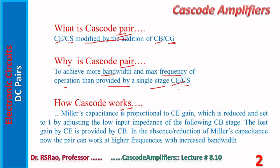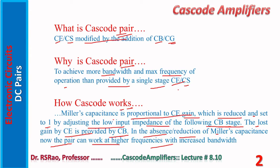Miller's capacitance is proportional to CE gain or CS gain, which is reduced and set to 1 by adjusting the low input impedance of the following CB stage. This describes the basic principle of design of cascode. The gain lost by CE is provided by CB. With the reduction of Miller's capacitance, the pair can now work at higher frequencies with increased bandwidth.